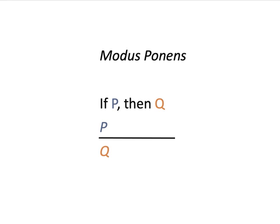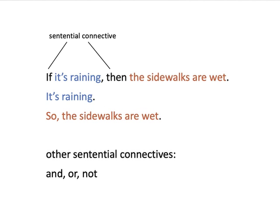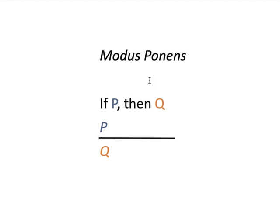Instead of using colors, we can start introducing letters. So we're introducing a bit of formalism: instead of full sentences, we use capital P and capital Q. P and Q represent any arbitrary sentence you could fill in for this argument. No matter what sentence fills in for P and Q throughout — as long as the same sentence is substituted for each occurrence of P and each occurrence of Q — we'll get an argument that shares a form with these arguments. And any argument of this form will be valid.